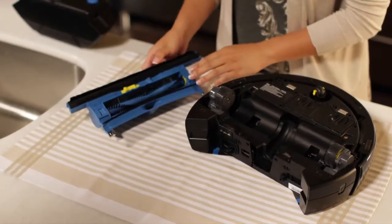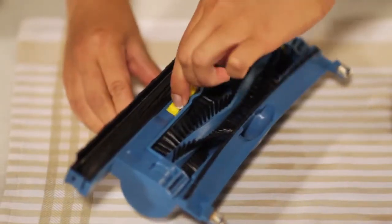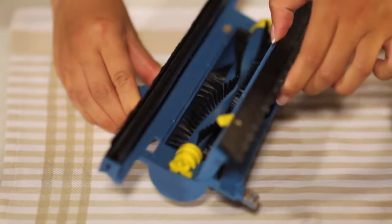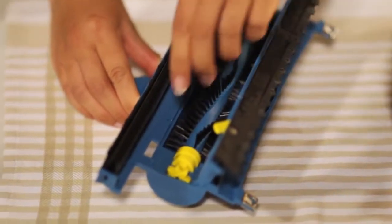To rinse the cleaning head and roller brush, push the roller brush cover release latch to the unlocked position and open the roller brush cover.